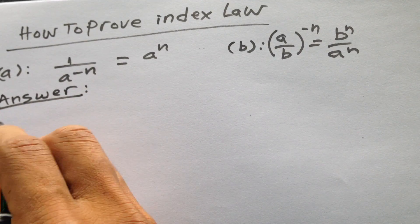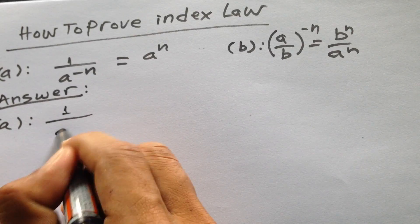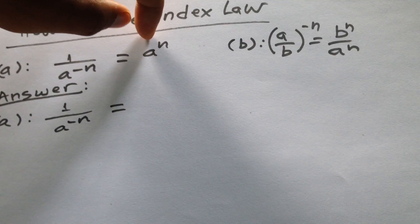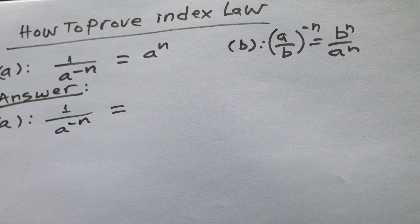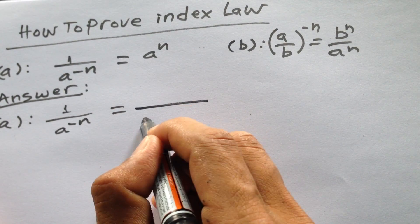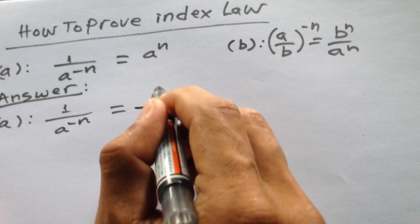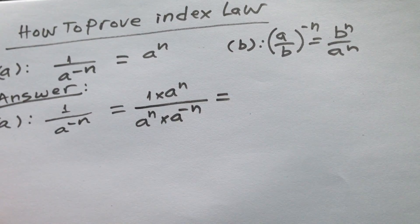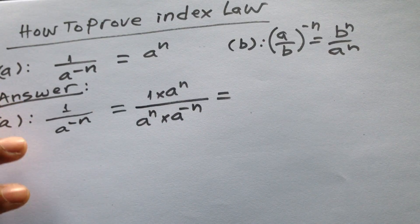We must put the left hand side and then simplify it to get the answer a to the power n. The first thing we need to find is that we can multiply by a to the power n, and 1 must be divided by a to the power n, and then we can simplify it to get 1 divided by a to the power n.